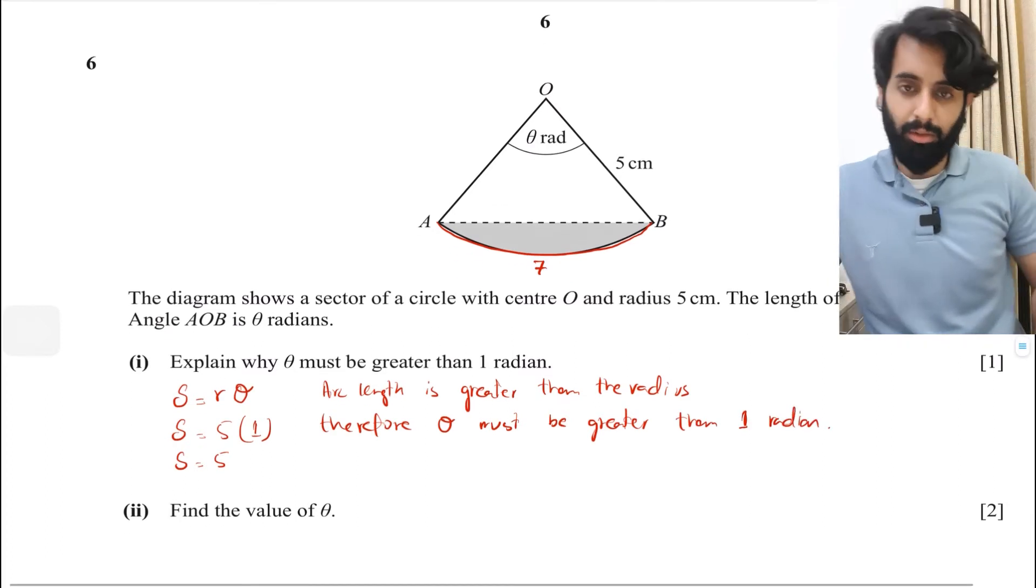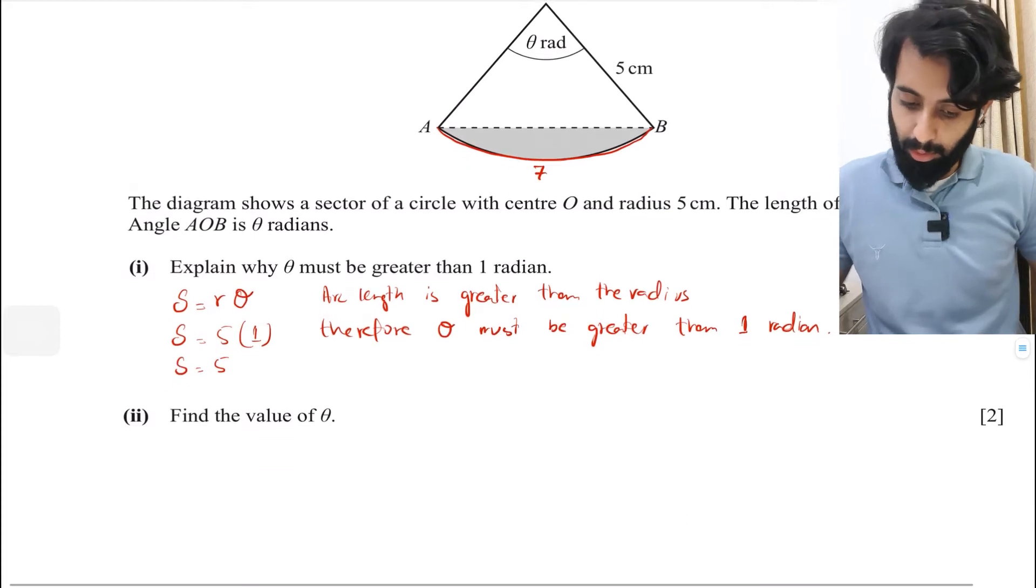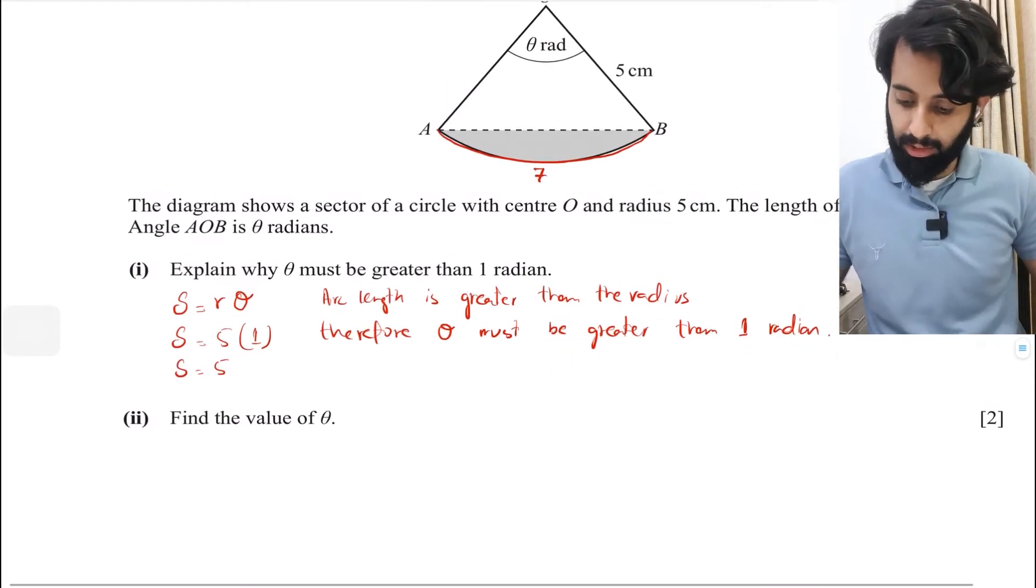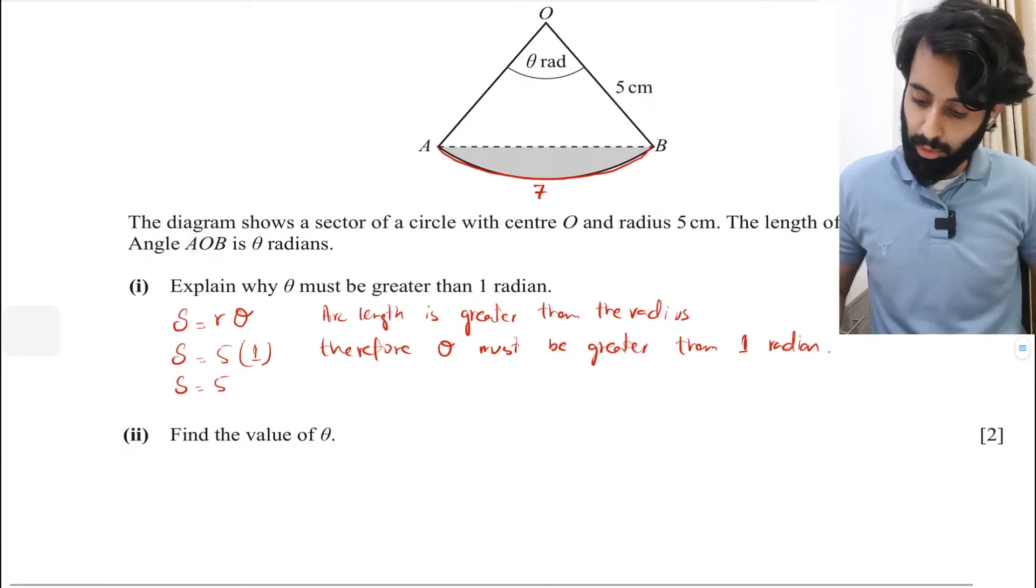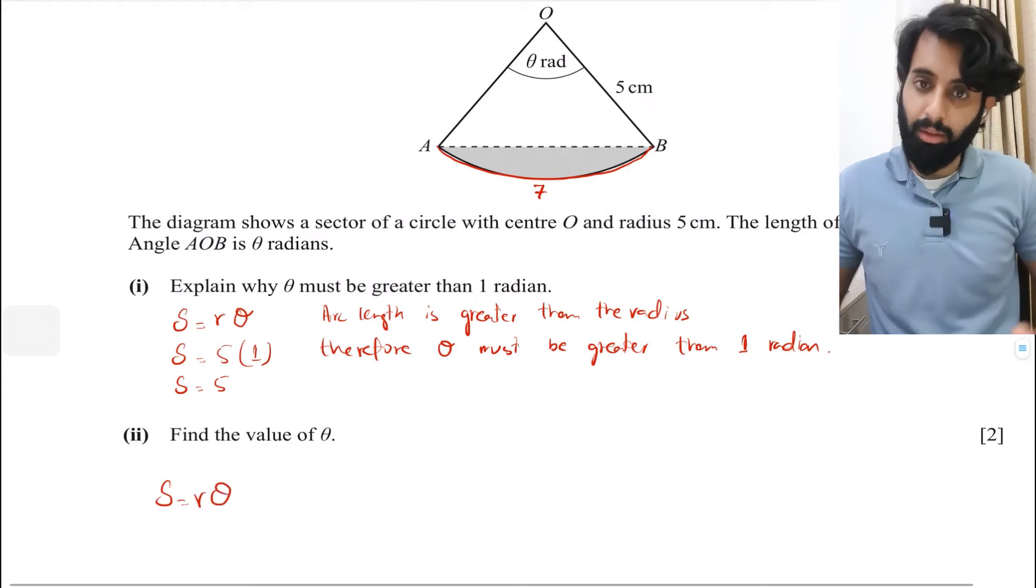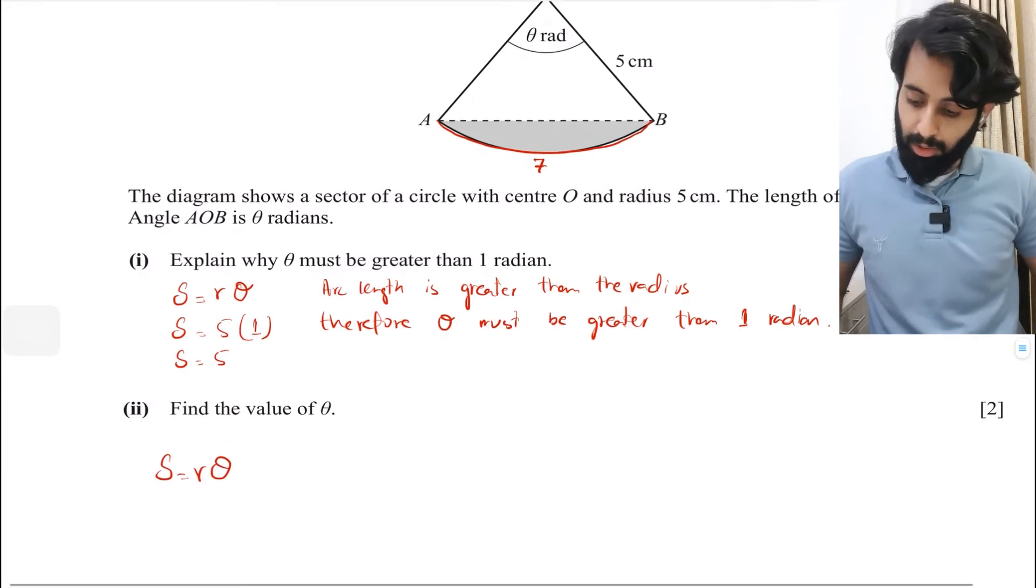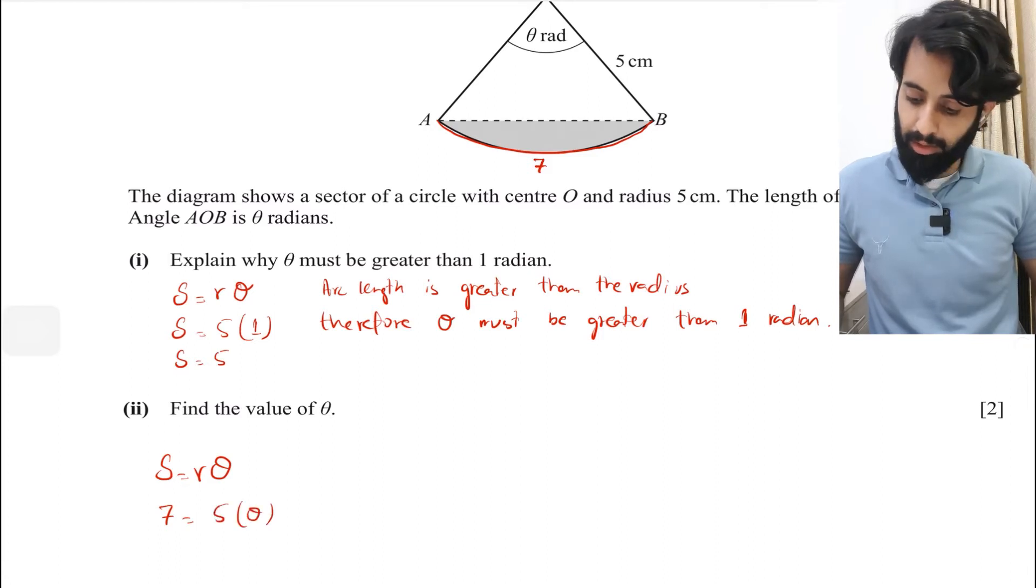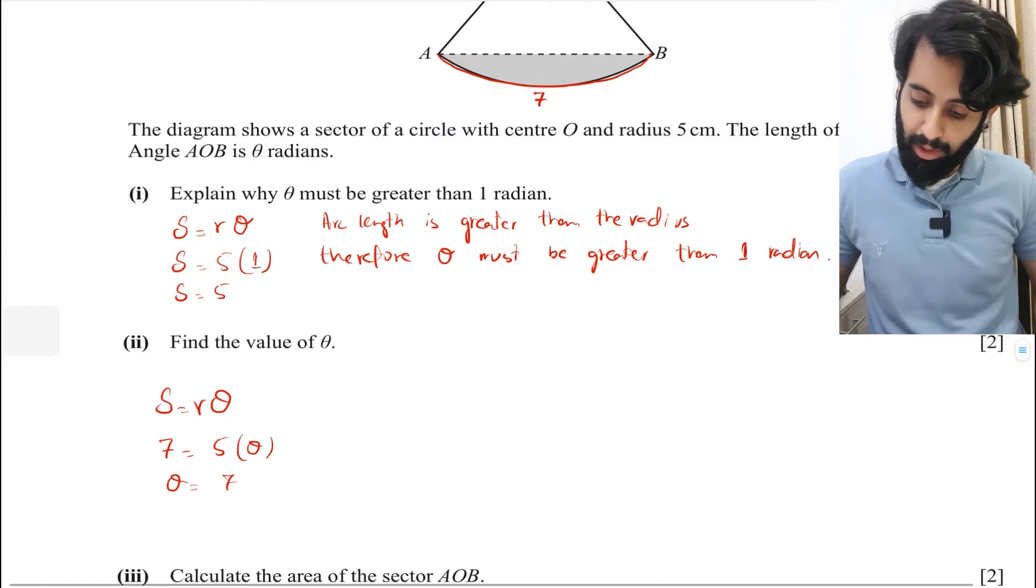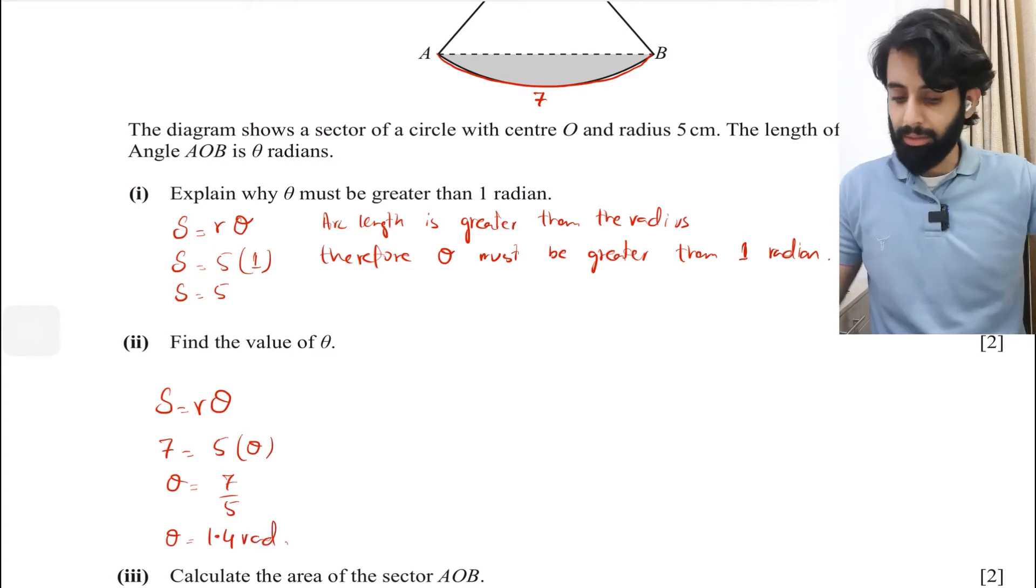Let's move on to part two. Part two is asking you to find the value of θ. That's a no-brainer: s equals r θ. Just remember the formula. s is 7, r is 5, θ we don't know. θ equals 7 upon 5, so that's 1.4 radians. You get two marks for that.